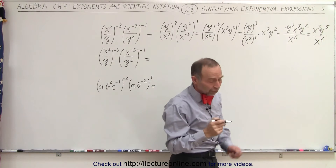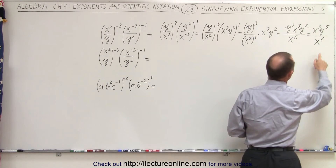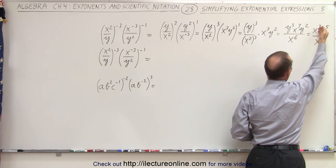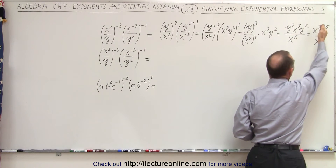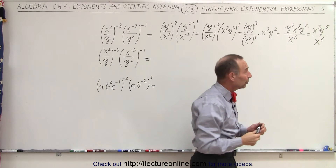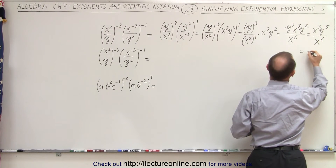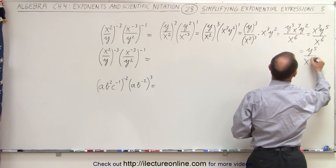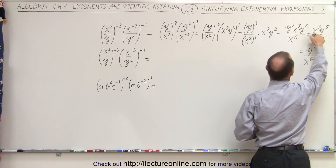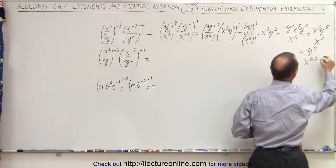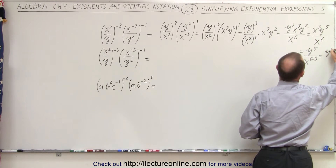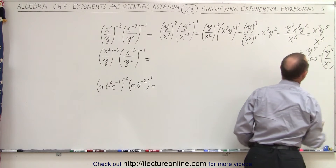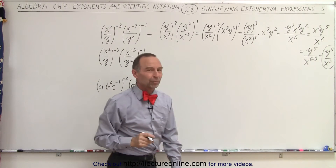Notice that the x in the denominator has the largest exponent, so it's better to bring the numerator down rather than bring the denominator up, because then we'd end up with a negative exponent. So this becomes equal to y to the fifth divided by x to the sixth minus 3 power. When we bring this down, we subtract exponents, so this is y to the fifth divided by x cubed. And that's the final answer of that initial expression.